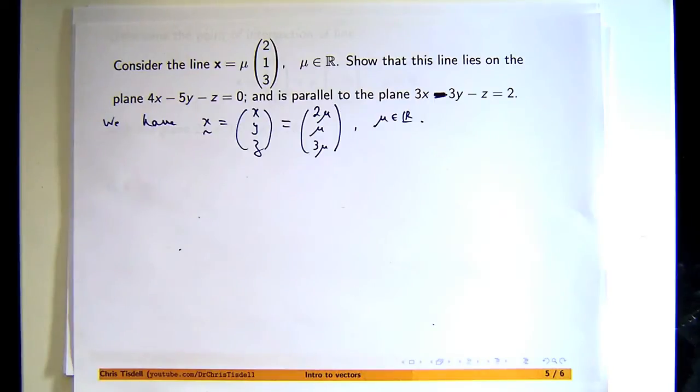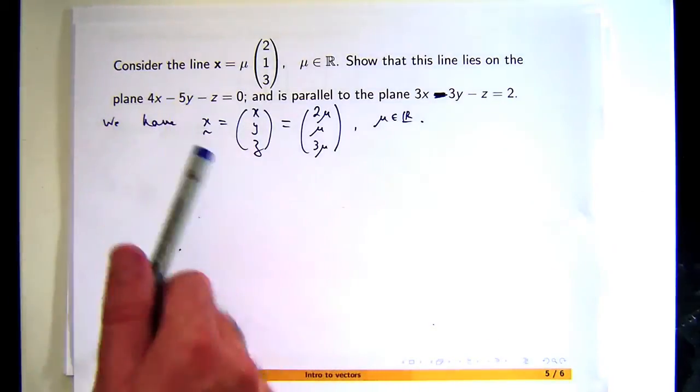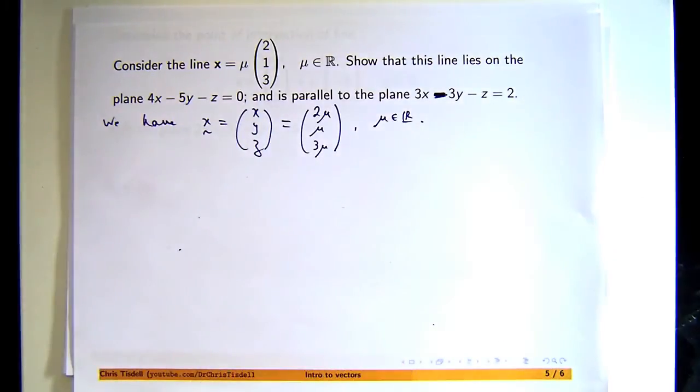So each of the components is a function of one variable, mu. For the first part of the problem, what you would do, it's very easy, you don't have to visualize anything really,